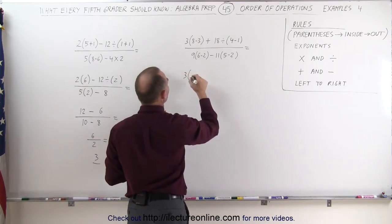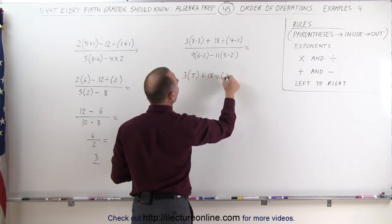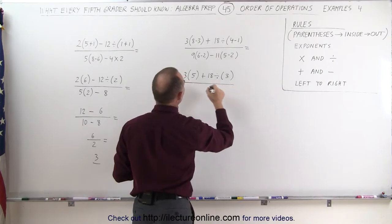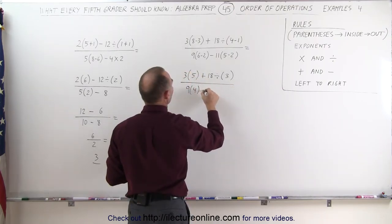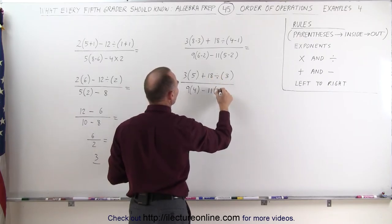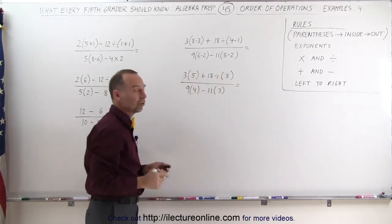We get 3 times 8 minus 3 is 5, plus 18, divided by 4 minus 1, which is 3, divided by 9 times 6 minus 2, which is 4, minus 11 times 5 minus 2 is 3. Now we go ahead and do the multiplication and divisions.